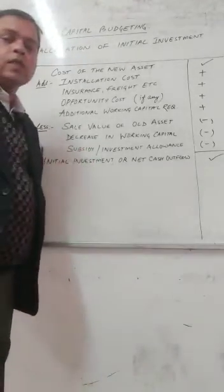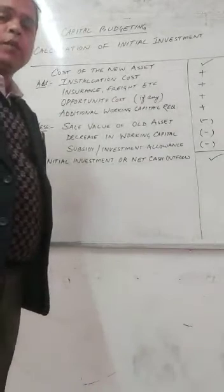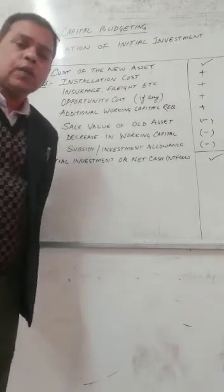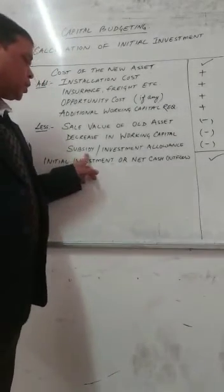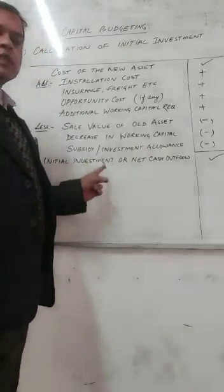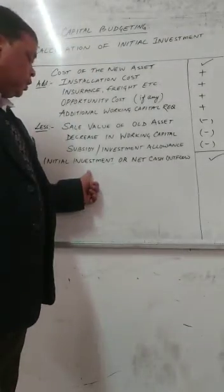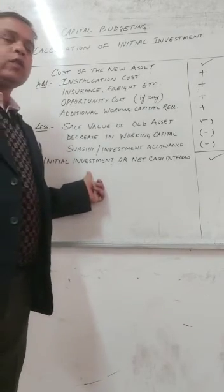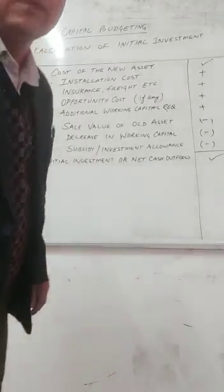If you are purchasing an asset on which the government is providing any type of subsidy or investment allowance, that is an inflow for the company — meaning the cost of the asset is reduced by that amount. So we are going to deduct the subsidy and investment allowance as well. After making all these adjustments to the cost of the new asset, we get the initial investment or net cash outflow, which is the first thing to calculate in capital budgeting. Thank you.